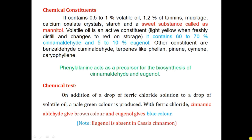The major constituent is cinnamaldehyde, along with 5-10% of eugenol. Other constituents are benzaldehyde and cuminaldehyde. Phenylalanine, the amino acid, acts as a precursor for the synthesis of cinnamaldehyde and eugenol. If you want to synthesize cinnamaldehyde and eugenol, you require the precursor phenylalanine. This is important from an entrance examination point of view.